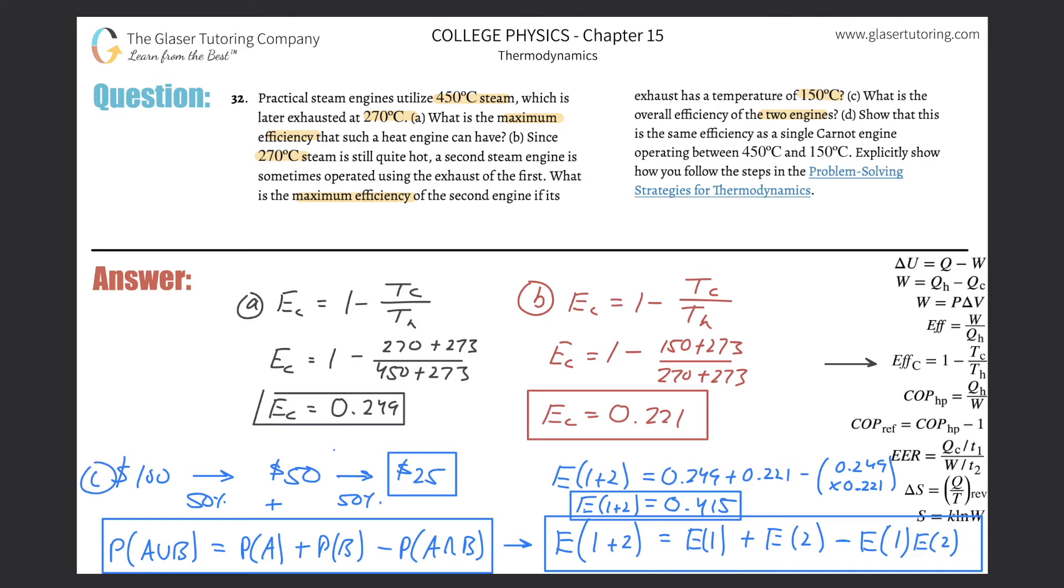All right. So this is an unusual way to solve. There are many ways to solve this. All right. But I figured it might be an interesting time to make a connection maybe to another subject. Anyway, letter D, show that this is the same efficiency as a single Carnot engine operating between 450 and 150. So now this basically just says, hey, use this formula, which we could have done, which would have been the easier way to do it, but they wanted us to do it the hard way, is now to use this formula. It's the same formula we were using here and here. Okay. It's going to be the one minus temperature of the cold divided by temperature of the hot.